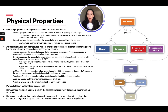Physical properties can be measured without altering the substances. This includes melting points, boiling points, freezing points, volume, viscosity, and density. Volume measures the amount of space that a substance occupies, and viscosity measures a substance's resistance to motion when force is applied.